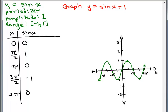So remember if we just have y equals sine of x, we had a period of 2π, amplitude of 1. The range was in between negative 1 and 1 and these were our five key points here: (0, 0), (π/2, 1), (π, 0), (3π/2, -1), and (2π, 0).